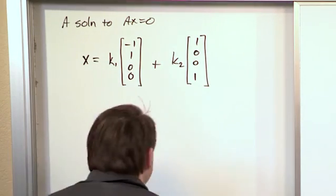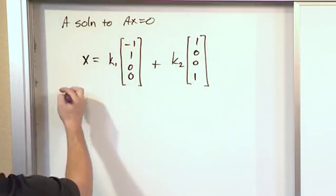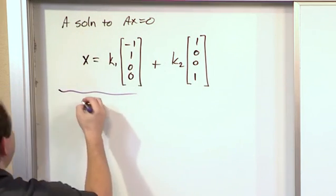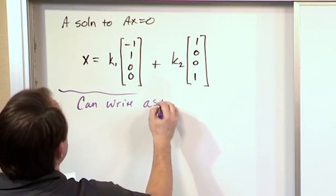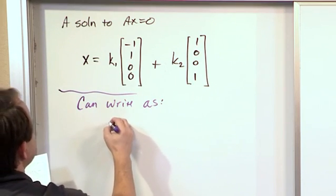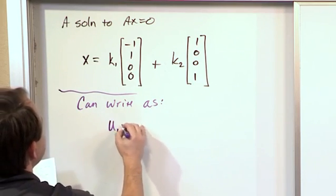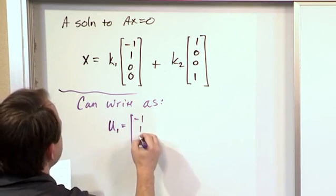Now we can write this. This is what we studied before. Now we're moving into new material. We can write it as the following. It's not really too different, but we can say U1, we can just set that equal to [-1, 1, 0, 0].